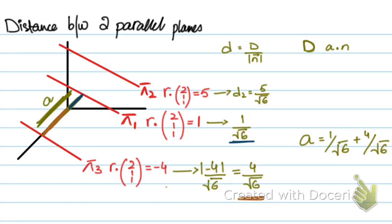1 over root 6 plus 4 over root 6. So, basically, I add the two distances, and I get the distance between the first plane and the third plane, 5 over root 6.